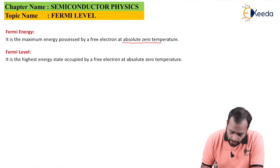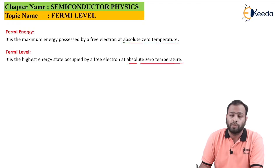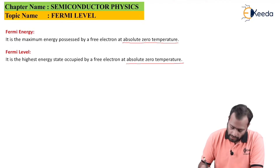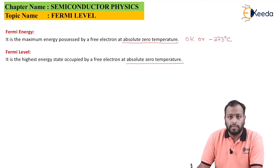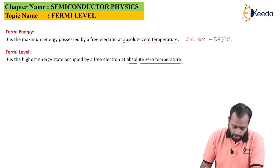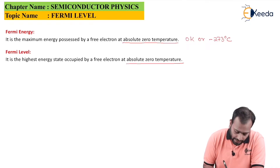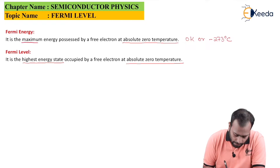In both cases, we are talking about absolute zero temperature, which is nothing but zero Kelvin or minus 273 degrees centigrade. This is the temperature at which all motion is ceased. The important point to note is that Fermi level is the highest energy state and Fermi energy is the maximum energy possessed by a free electron.